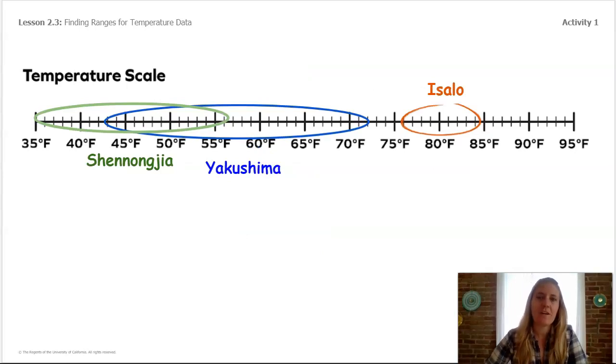How do meteorologists figure out the total precipitation for the month so that they can compare places? For meteorologists to figure out the total precipitation for the month, they add up the precipitation from every day and find the total. Why do you think that's useful?